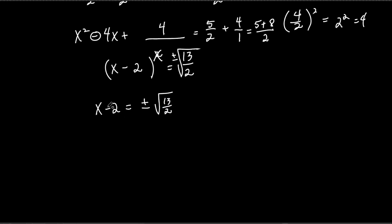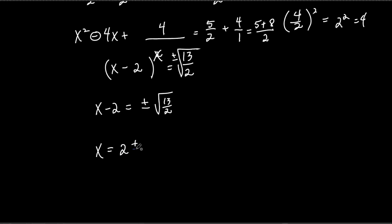I've almost got x by itself. What do I do to get x by itself? Add two. Most of the time we put it up front to keep it consistent and looking clean. So x equals two plus or minus — but let's not write the radical just yet because we still need to simplify the square root of thirteen over two.